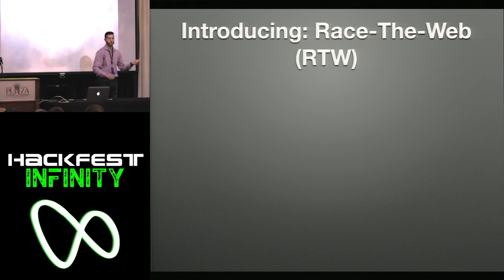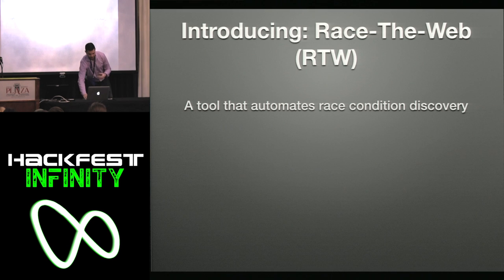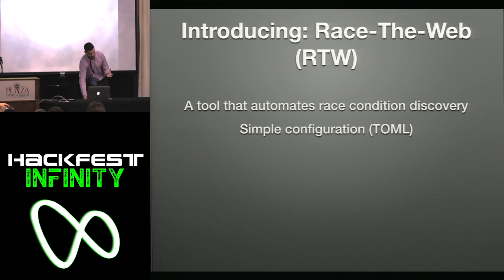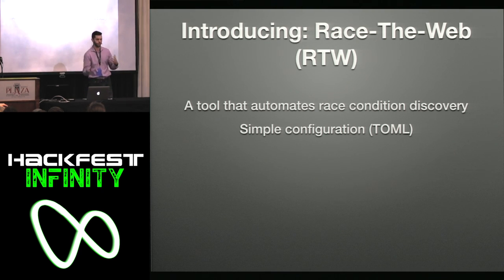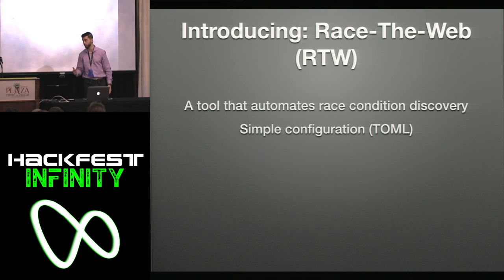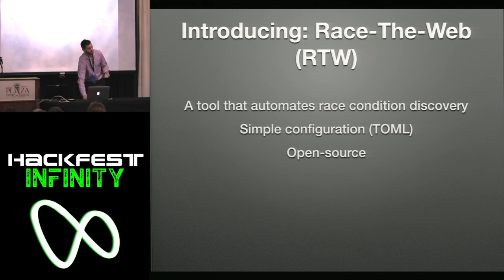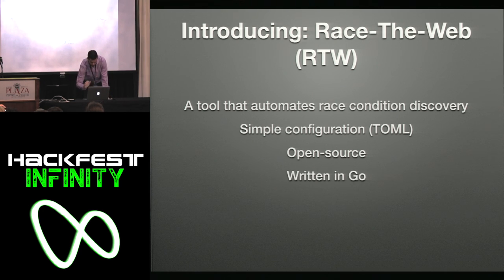There is a better way — a tool I've written called Race the Web. This tool automates race condition discovery. It uses TOML — Tom's Obvious Minimal Language, kind of like YAML, written by Tom Preston-Werner, creator of GitHub. It's easy to parse programmatically and easy to read. It's also open source. And it's written in Go — so if you want to check out what Go looks like, take a look at that.